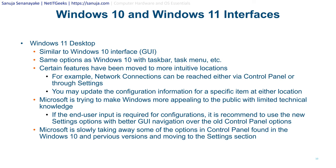Microsoft is doing this to make Windows more appealing to the public with limited technical knowledge. Instead of going to the control panel, you can now go to the Settings app and change items more easily. If your end user needs to enter an IP address for a static IP configuration, it is recommended as of August 2022 to use the new Settings options with better GUI navigation over the old control panel options. Don't send end users through the control panel in Windows 11 — send them through the Settings options on the start menu.